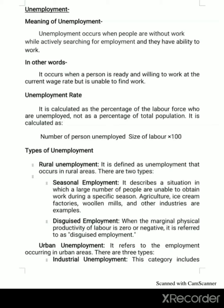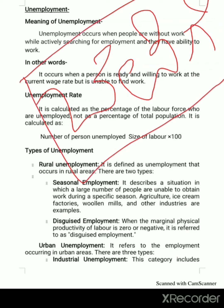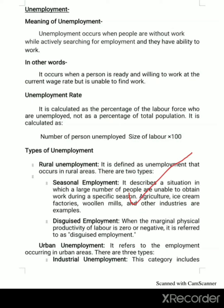There are types of unemployment: rural unemployment and urban unemployment. Rural unemployment occurs in rural areas and is further classified into two types — seasonal unemployment and disguised unemployment. Seasonal unemployment occurs in agriculture or industries like ice cream factories, where workers are employed only during a particular season and are unemployed in other seasons.